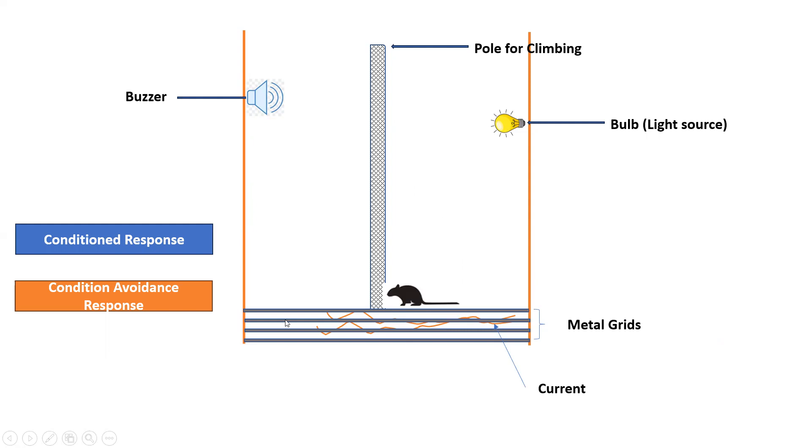Now you can give the test drug, that is antipsychotic drug, to the animal and after some time you can again repeat the experiment. In this case, what happens if your drug has the activity, that is antipsychotic activity, then if you give the buzzer and you apply the current, the animal will not move towards the pole.